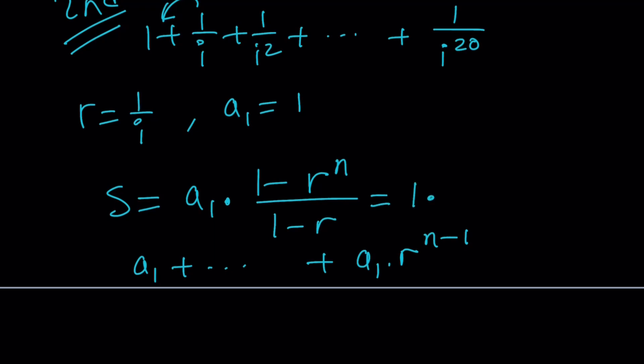1 minus r. r is 1 over i. And we're going to raise it to the power 21. And that's going to be divided by 1 minus 1 over i. That kind of looks like a complicated expression, but guess what? We can easily evaluate it.